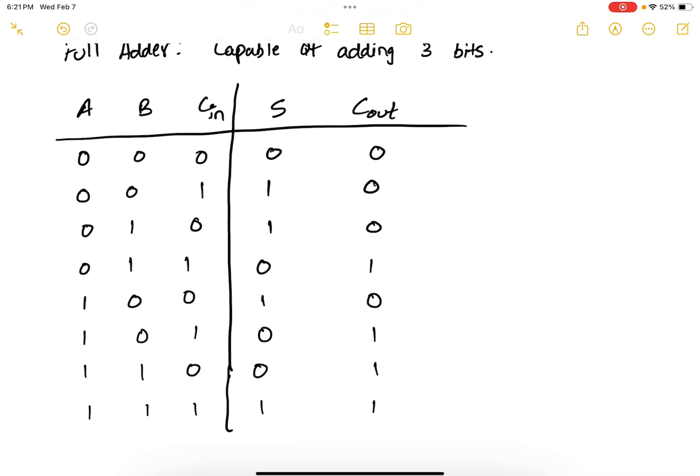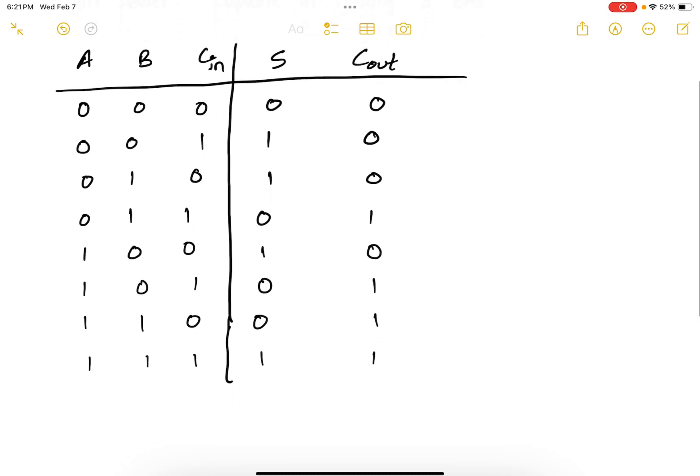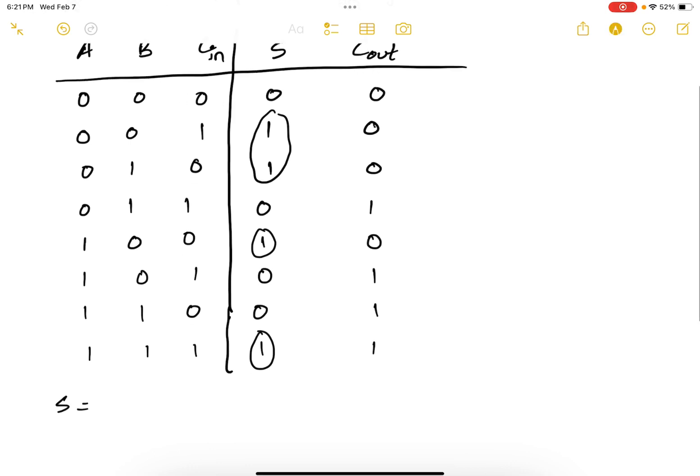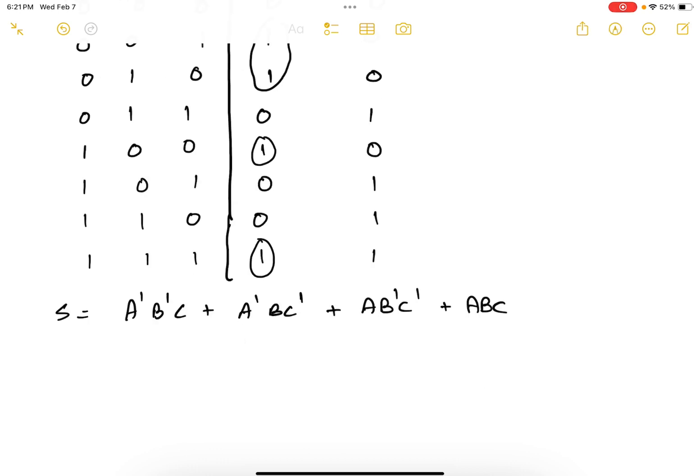Using this truth table, let us construct the Boolean expressions for S and C out. The Boolean expression for S would be, we are interested in four combinations. So S equals A' B' C or A' B C' or A B' C' or A B C.